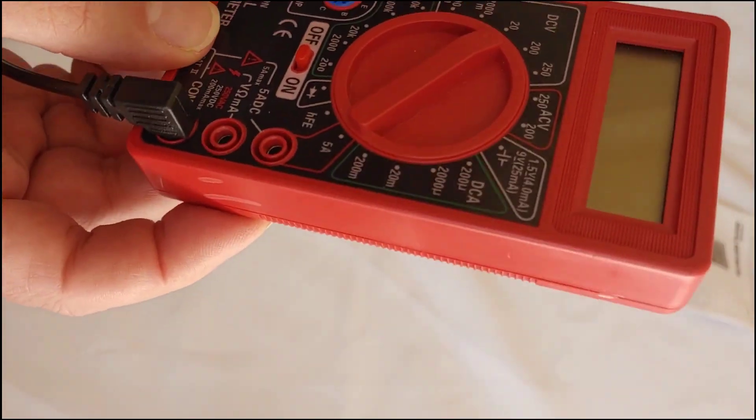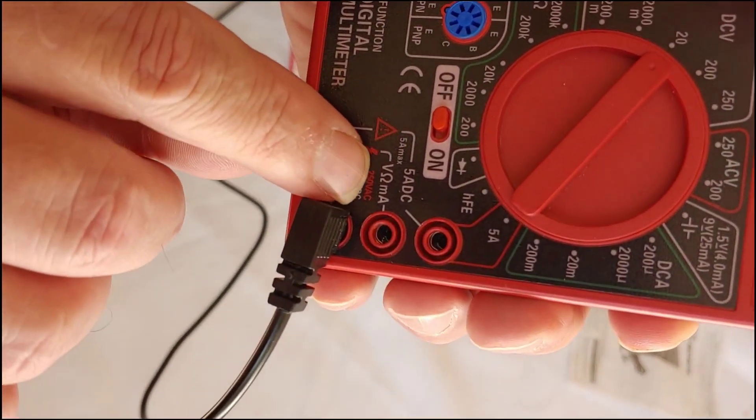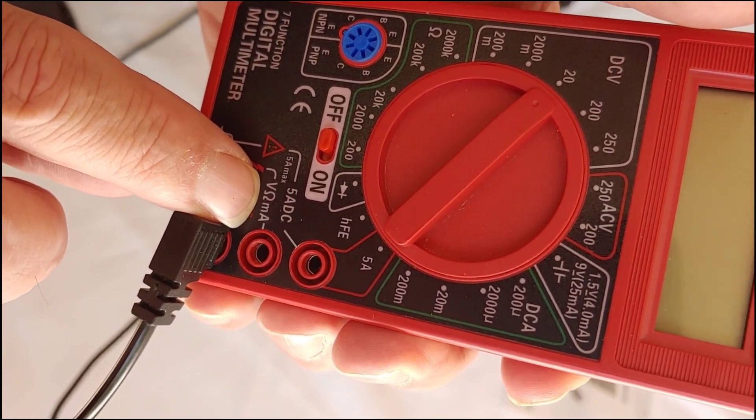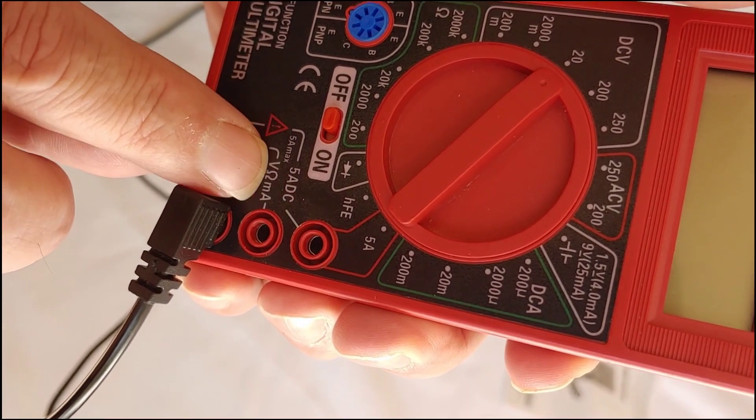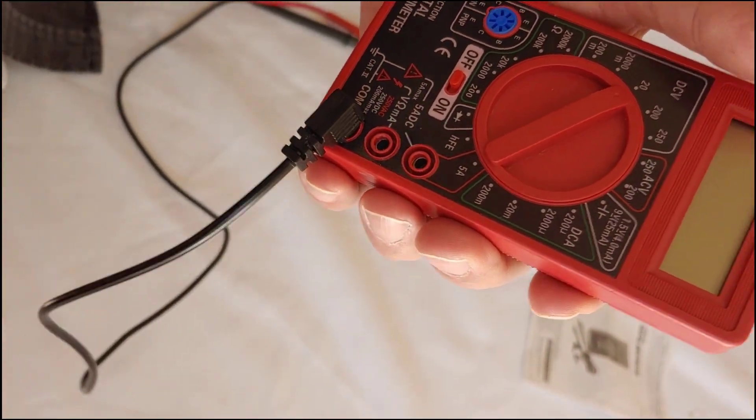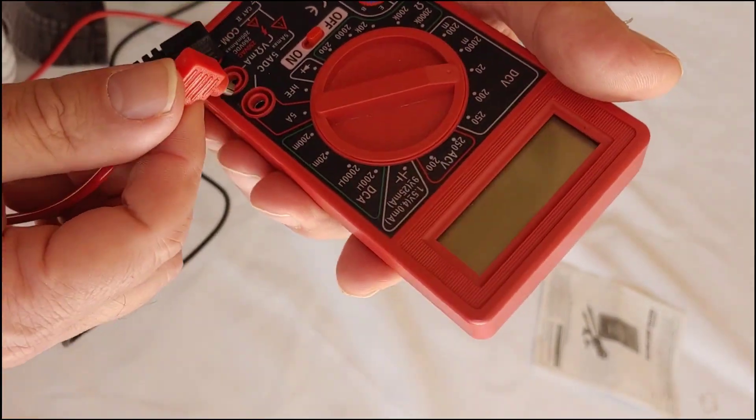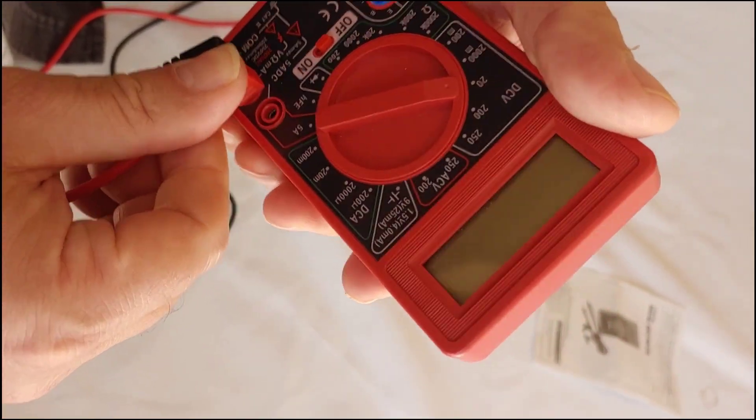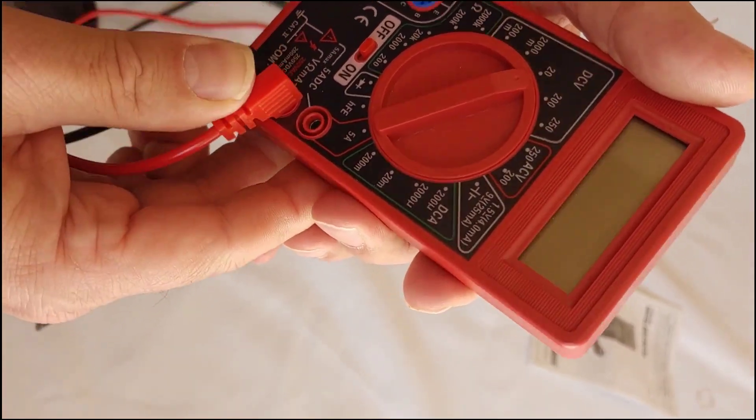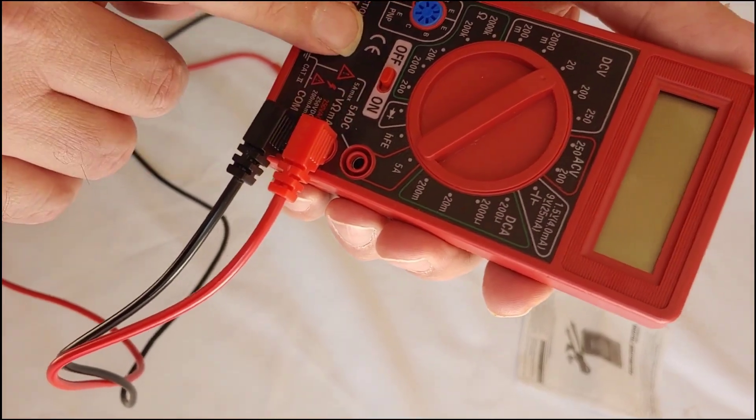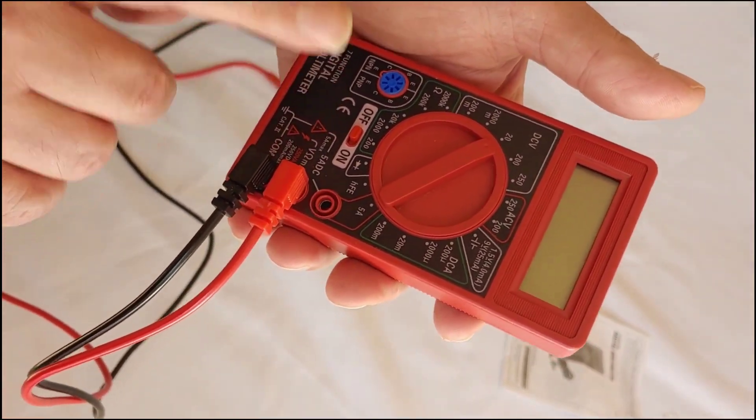The next lead we're going to talk about is the red. Of course, it's positive. It goes into the one that has the V for a volt and the little horseshoe there, which is an omega symbol. Always, you're going to put it in there when you're doing just volts. Take it and just plug it in. They are now plugged in. This is the basic setup for how you check volts with a multimeter.